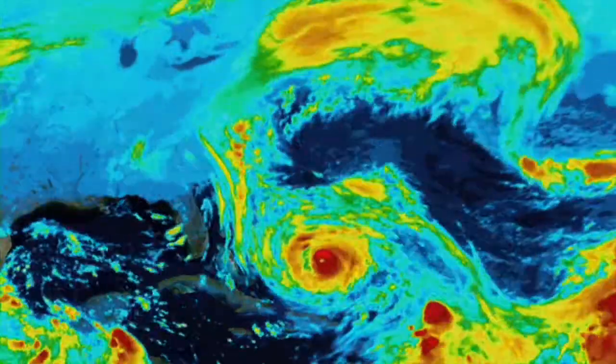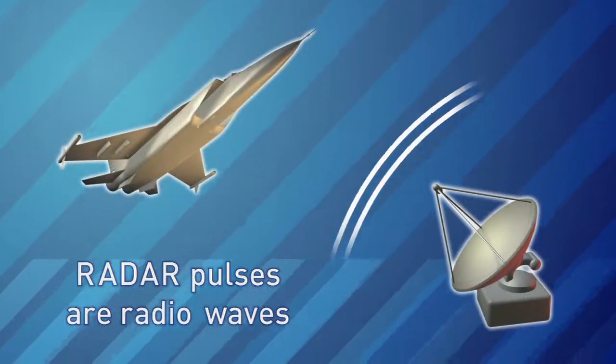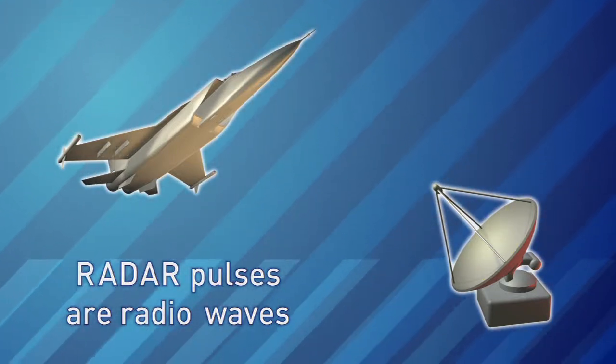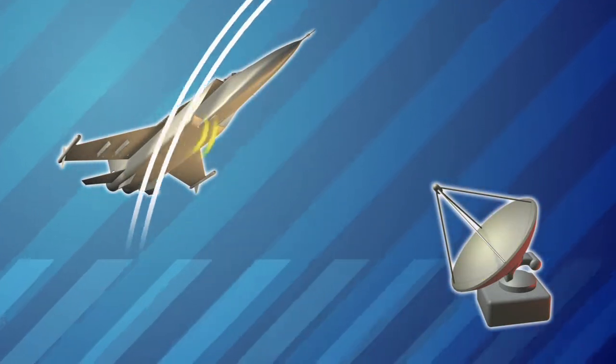Radar can also help scientists analyze storms and predict the weather. Radar works by having a radar transmitter turn on and shoot out a pulse of electromagnetic energy. That pulse then travels to the target where it bounces off, and then the radar listens for the echo off of that target.